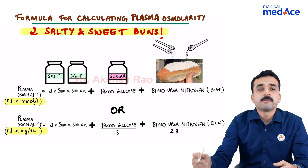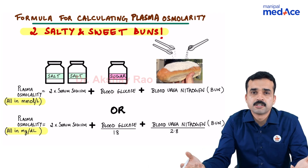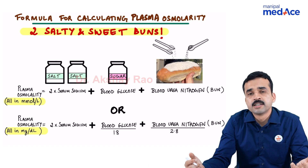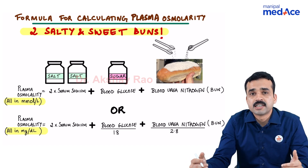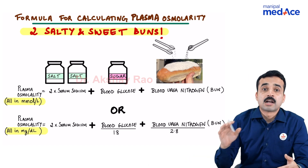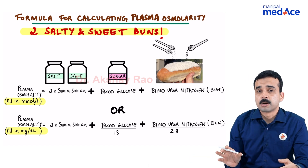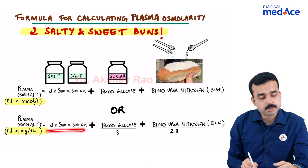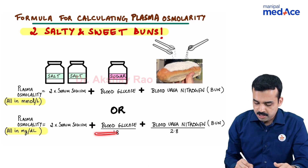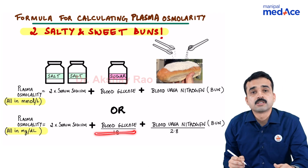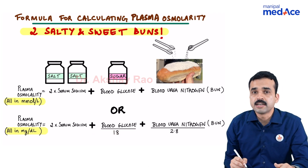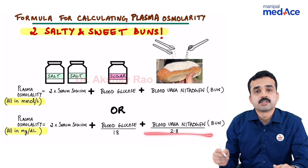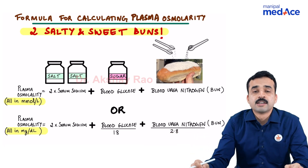But when we measure conventionally — as we do here in our country — in milligram per deciliter, there are correction factors to be applied. The formula becomes: 2 into serum sodium (that remains the same), plus blood glucose divided by 18, plus blood urea nitrogen value divided by 2.8.